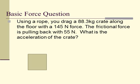Here is an example of a really easy problem that most students are able to solve on their own, but we're going to walk through the different steps. Using a rope you drag an 88.3 kilogram crate along the floor with a 145 Newton force. The frictional force is pulling back with 55 Newtons. What is the acceleration of the crate? From the context of the problem we can tell the object is accelerating, so we'll have an overall unbalanced or net force in a certain direction.